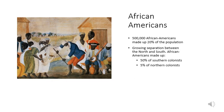It wasn't just nationality that made the colonies diverse. Racial background also made the colonies a diverse place. 500,000 African Americans made up 20% of the population by the later colonial period. A growing separation between North and South was also becoming apparent — African Americans made up 50% of colonists in the South, but only 5% of colonists in the North.